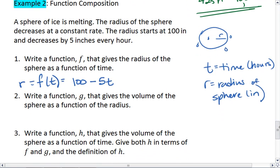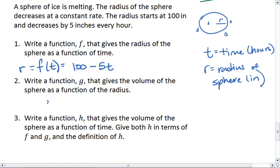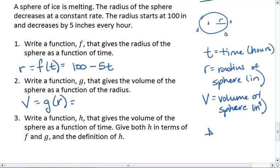Okay, we then want to write a function g that gives the volume of the sphere as a function of the radius. V will be volume of sphere in inches cubed. And the volume of the sphere is 4 thirds pi r cubed. Since this function is in terms of r, then we can just plug in the formula 4 thirds pi r cubed.